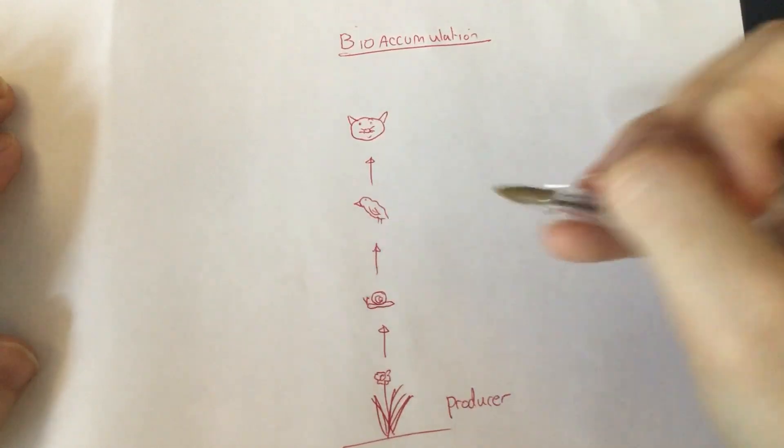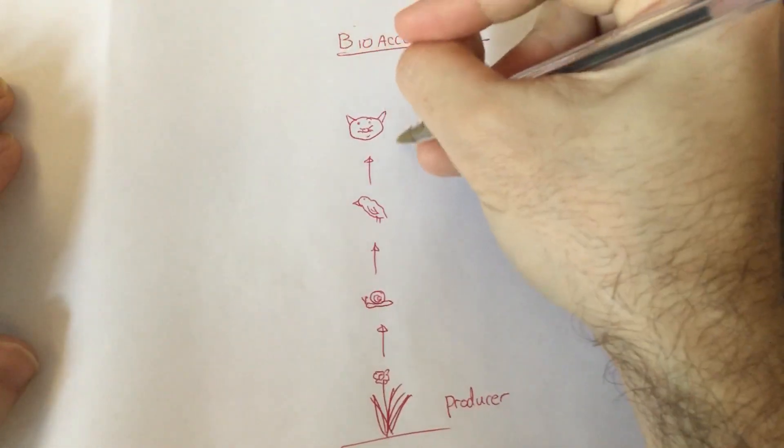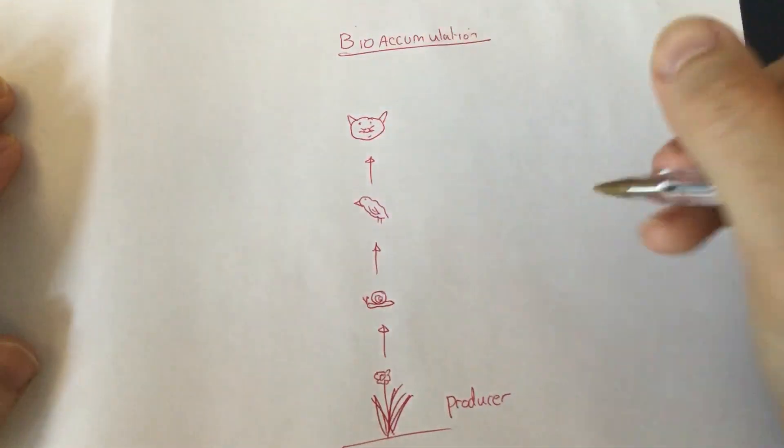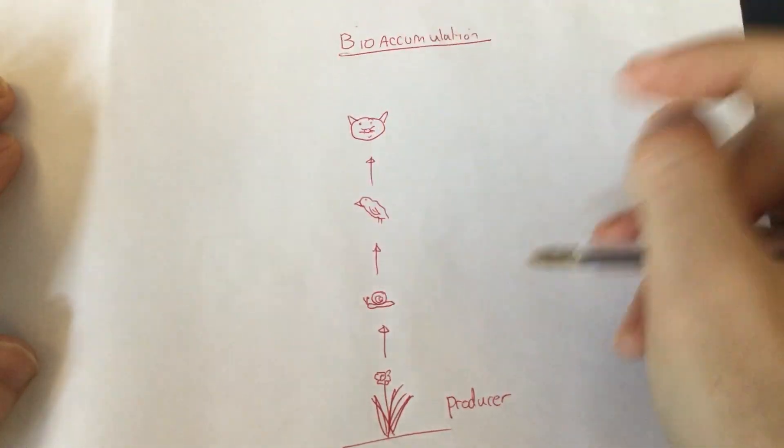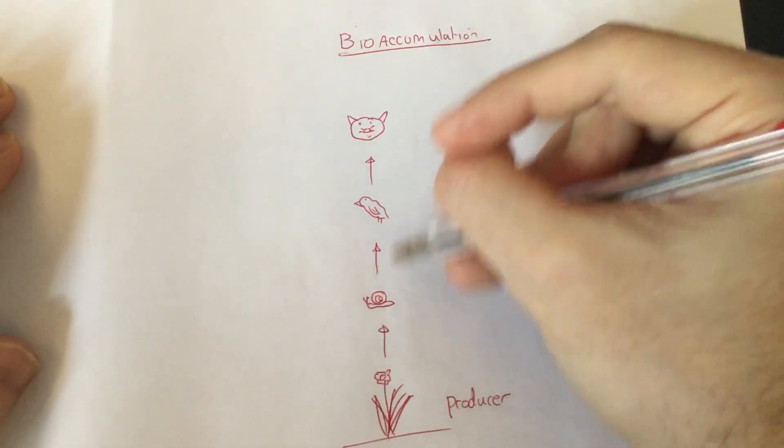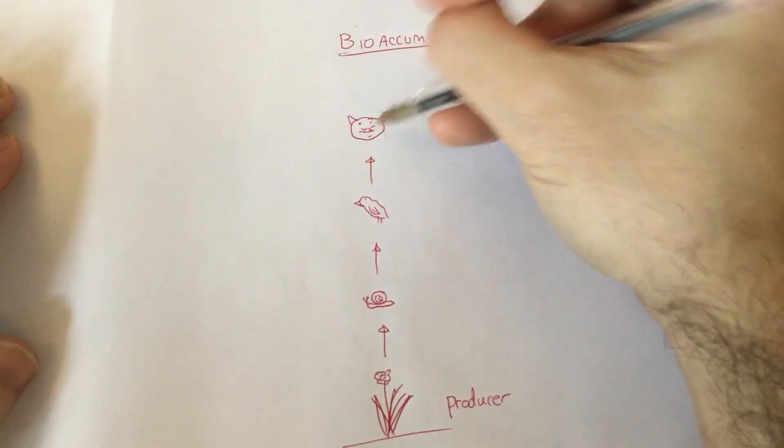So we've got three consumers: the primary, the secondary and the tertiary. These eat each other. So this one is eaten by this one, this one is eaten by that one.